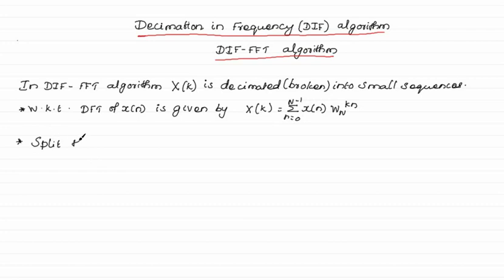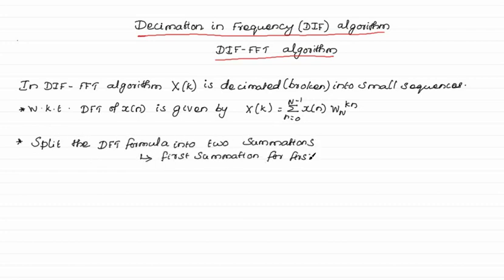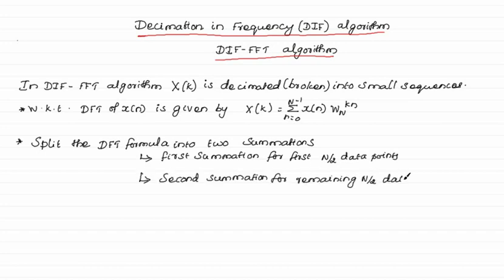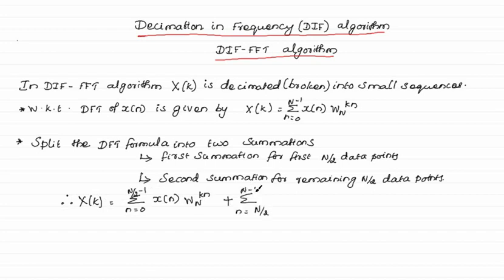Split the DFT formula into two summations. The first summation covers the first N by 2 data points, and the second summation covers the remaining N by 2 data points. Therefore, X of K can be written as the summation of two sequences: the first sequence ranges from 0 to N by 2 minus 1, and the second sequence ranges from N by 2 to N minus 1.